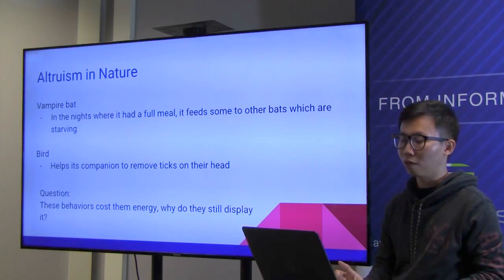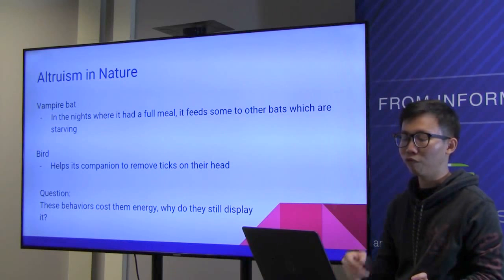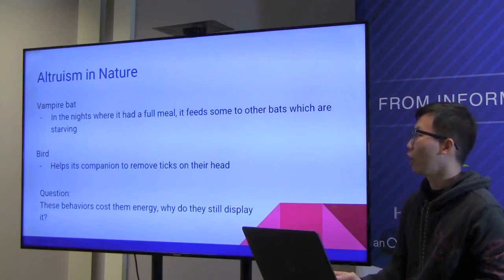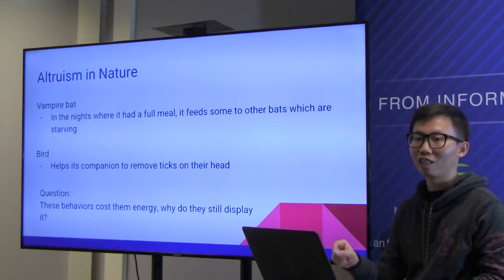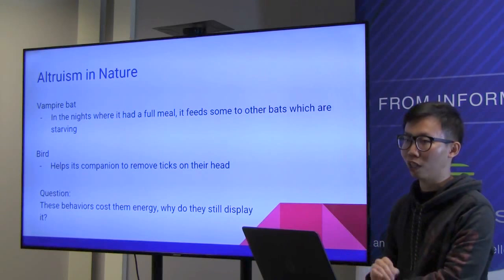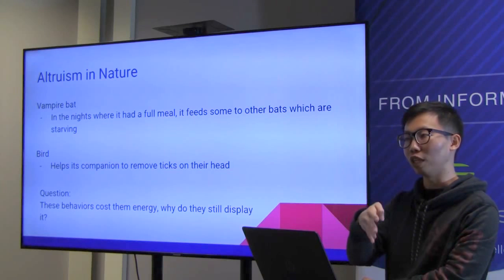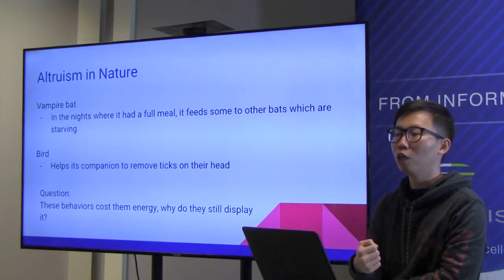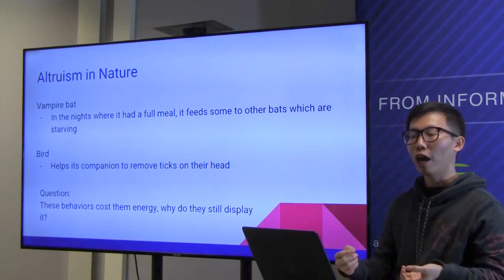For example, in vampire bats, if one has a full meal at night, it will feed some food to other bats that are starving. Also, birds help companions remove ticks from their heads because they can't reach their own heads. These behaviors cost energy and give no direct benefit to the giver — so why do they display this behavior? These are the paradoxes in evolutionary theory that Richard Dawkins tries to explain using game theory.